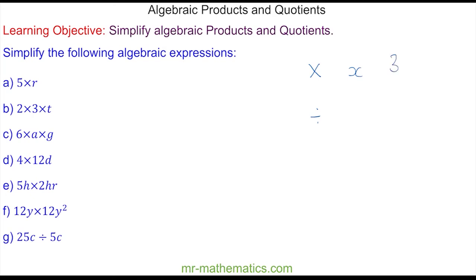Instead we write a fraction. For instance, 3 times c we write as 3c, and 3 divided by c we write as 3 over c. We're going to use these two rules to simplify the expressions a to g.